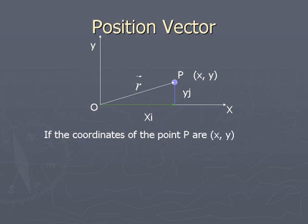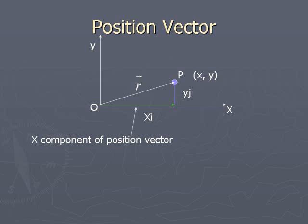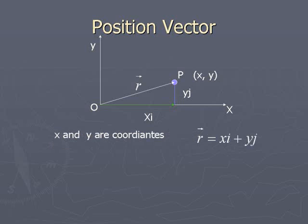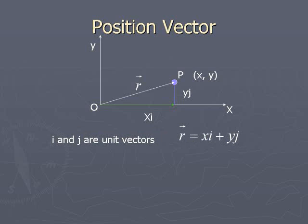If the coordinates of point P are x and y, then x·i is the x-component of the position vector and y·j is the y-component of the position vector. So the position vector of P, represented by R̄, equals x·i plus y·j. Here x and y are coordinates, and i and j are unit vectors along the x-axis and y-axis.